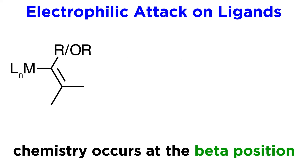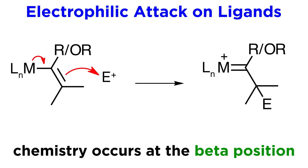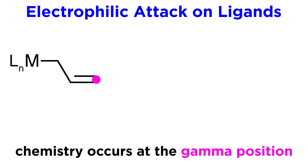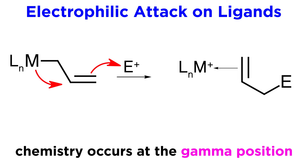Additionally, the beta position can attack when there is an alpha-beta pi bond. Here, the metal atom generates a pi bond with the adjacent carbon, thus pushing this other pi bond to coordinate with the electrophile. This will result in an increase in the oxidation state of the metal. This works not just for carbon-carbon pi bonds, but for carbonyls as well, where the oxygen atom will coordinate to the electrophile. And finally, chemistry can even occur at the gamma position. Say there is a beta-gamma pi bond, and the metal attacks the beta position, pushing the pi bond out to attack the electrophile. This will result in a substituted alkene ligand that is now bound via pi to metal dative bonding.